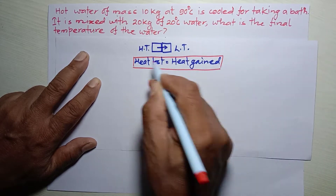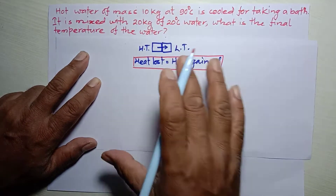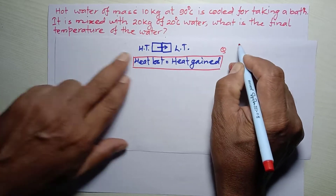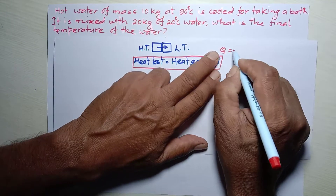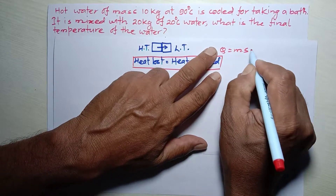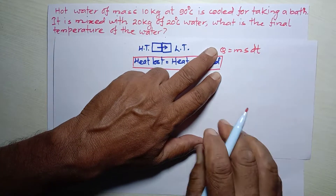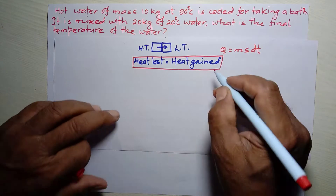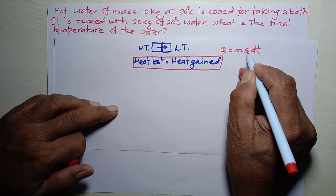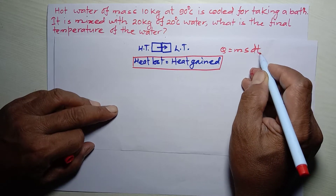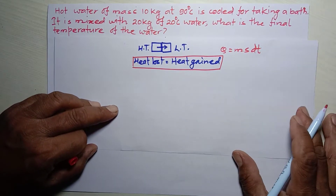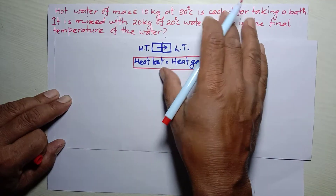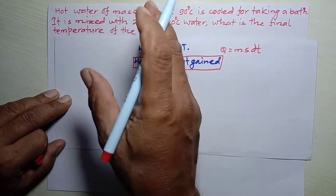To solve this numerical problem we also need the heat equation: Q = m·s·ΔT. Here Q is the quantity of heat, whether lost or gained by a body; m is mass; s is specific heat capacity; and ΔT is the difference of temperature.